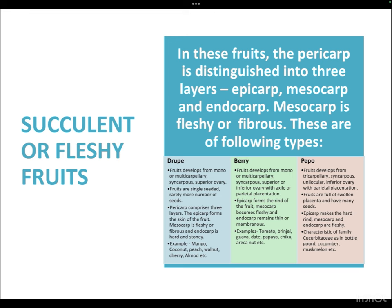Berry fruits develop from mono- or multicarpillary syncarpus superior or inferior ovary with axile or parietal placentation. The epicarp forms the rind, the mesocarp becomes fleshy, and the endocarp remains thin and papery. Examples are tomato, brinjal, chilli, guava, date, papaya, sapota (chiku), and betel nut.